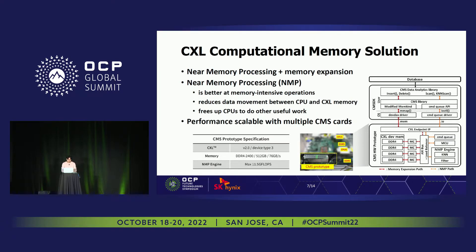The CXL computational memory solution is something we've been actively working on. As the name suggests, it is near memory processing on top of CXL memory expansion. It offers all the theoretical benefits of near memory processing: it is better at memory-intensive operations, it helps reduce data movement between CPUs and CXL memory, and it frees up CPU resources to do other, more useful work.